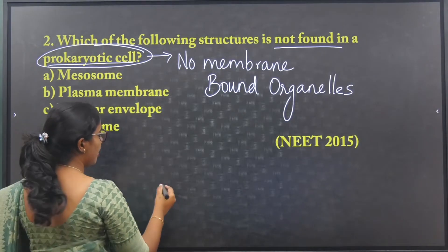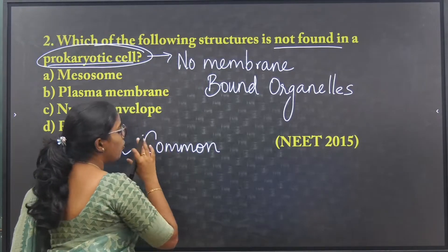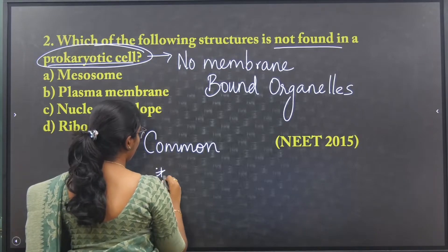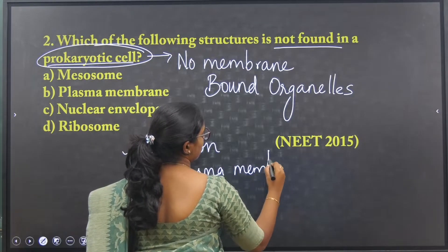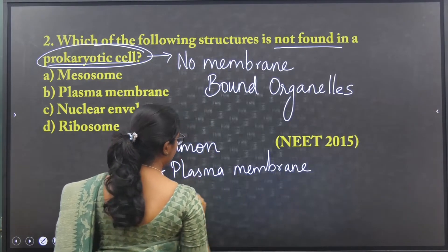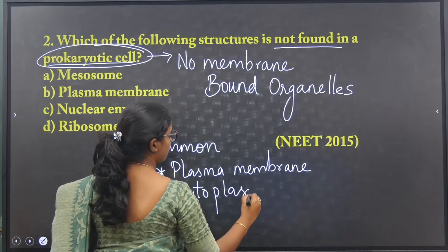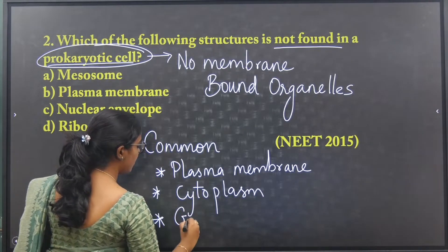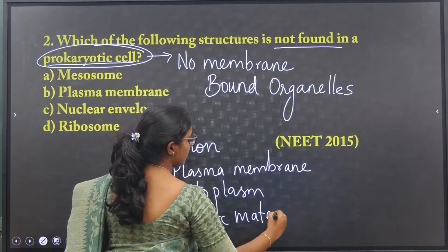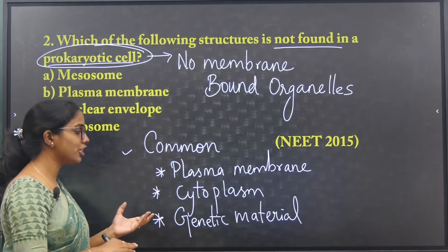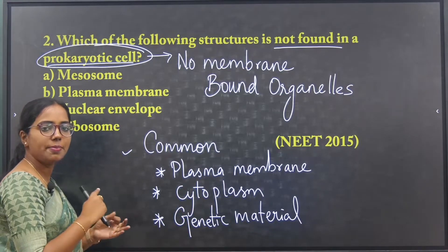What is the common feature for both prokaryotic and eukaryotic cells? The common features are plasma membrane, cytoplasm, and genetic material. These are common to all cell types.